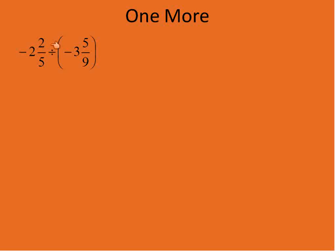One more question that we're going to do, and this one has to do with a negative divided by a negative. The most complicated type of question in this segment. So I'm going to do the exact same steps. I'm going to convert both of these fractions into improper fractions. 5 times 2 is 10, plus 2 is 12. And I have that divided by 3 times 9 is 27, plus 5 is 32, over 9, also a negative.